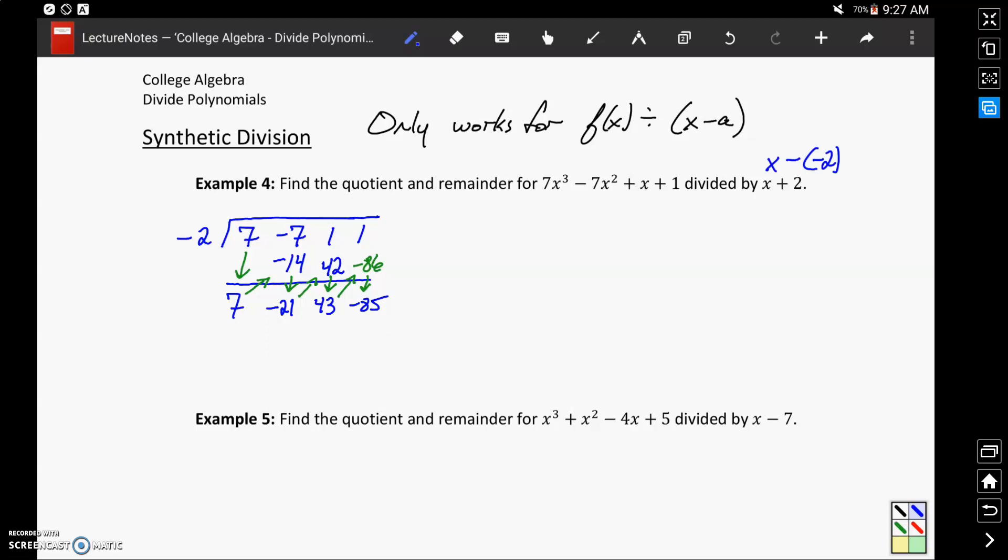Then in terms of our answer, we have this row of numbers, and what we'll do is translate that into our resulting polynomial and our remainder. In this case we started off with a polynomial of degree 3.